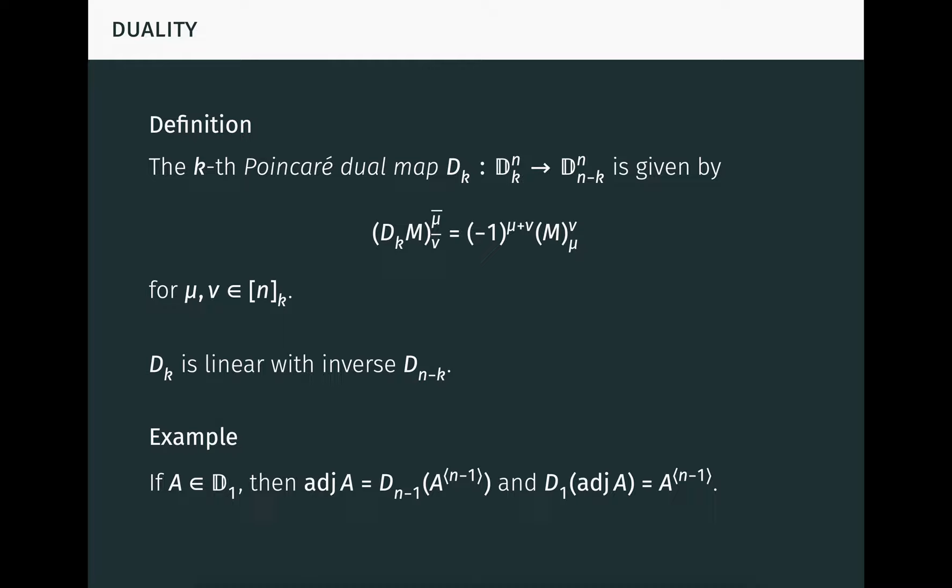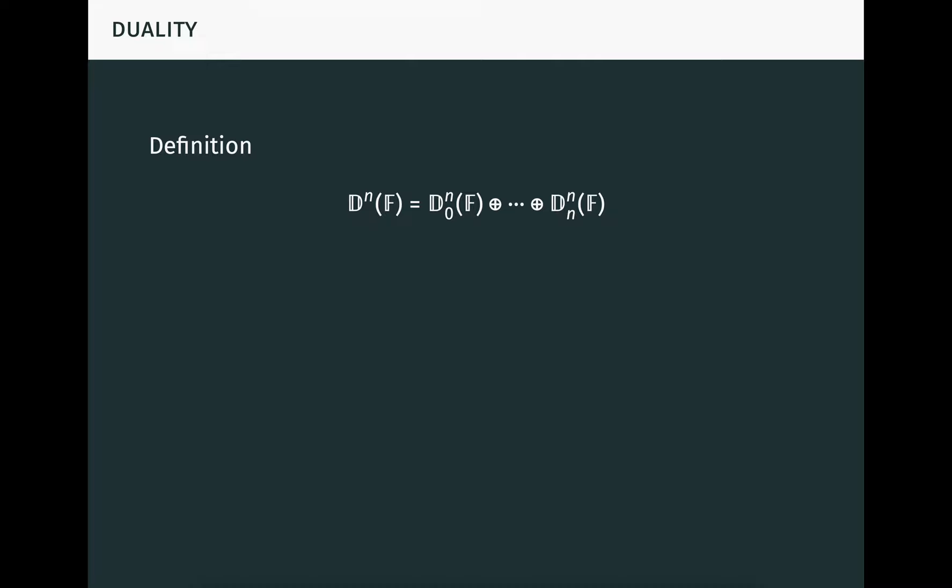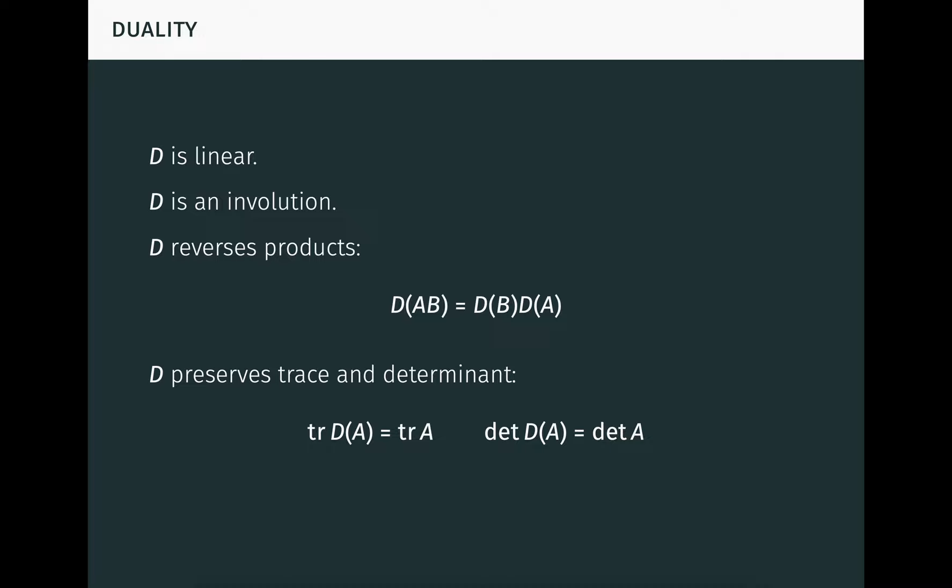We can combine all of the dual maps into a single map. First, we define dnf to be the direct sum of dn0f through dnnf. We simply write dn if f is understood, or d if n is also understood. Then the Poincaré dual map d on dn is defined to be the direct sum of the dual maps d0 through dn. This map has a number of nice properties. For starters, it's linear, since it's a direct sum of linear maps. It's also an involution, that is, it's its own inverse, since the kth and n minus kth dual maps are inverses for all k. It reverses matrix products as a result of the transposition involved in the definition of the dual maps. And it preserves the trace and determinant of matrices.